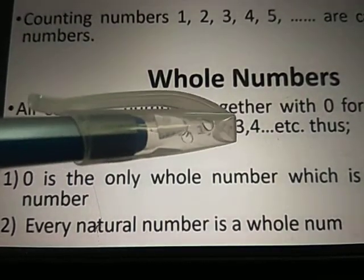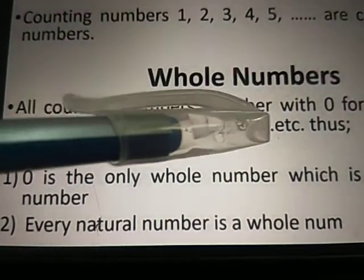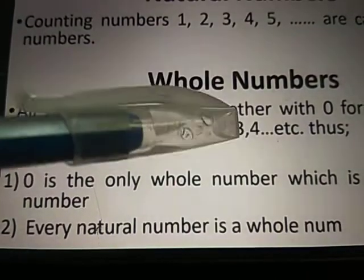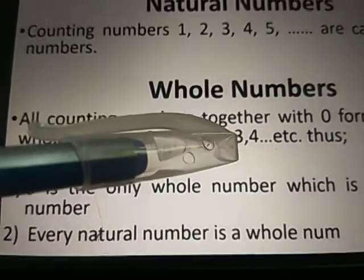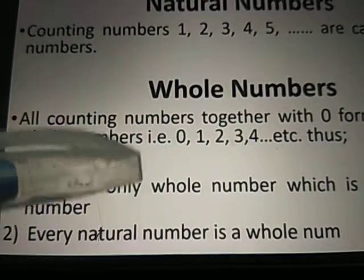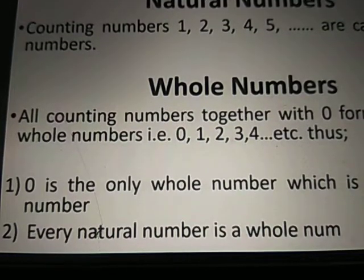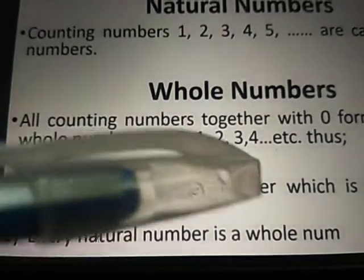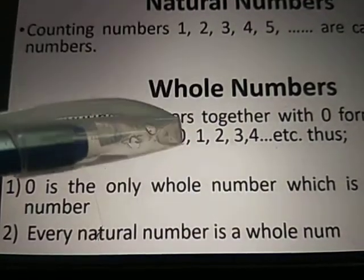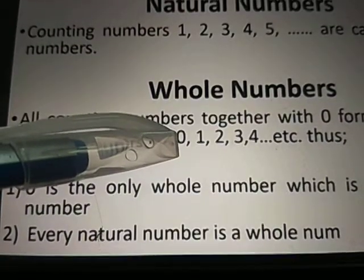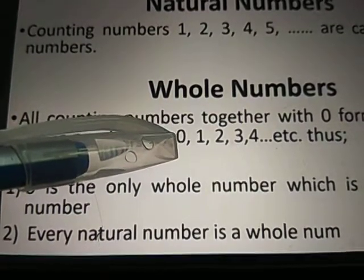Whole numbers go 0, 1, 2, 3 and so on. These are all nothing but whole numbers. 0 is the only whole number which is not a natural number. Every natural number is a whole number, but 0 here is not a natural number.